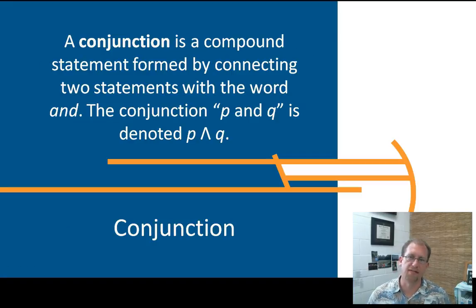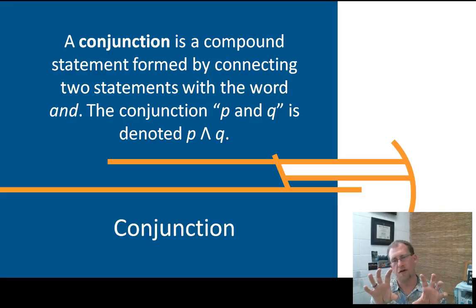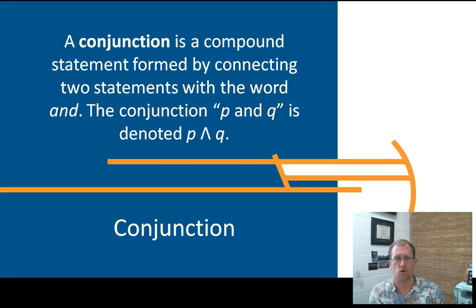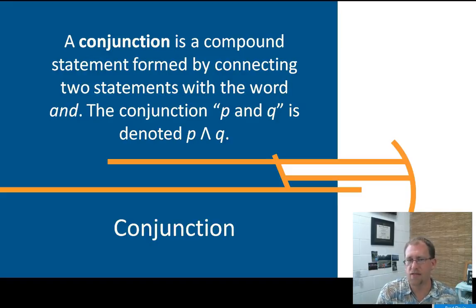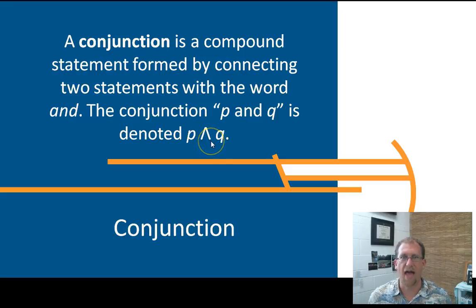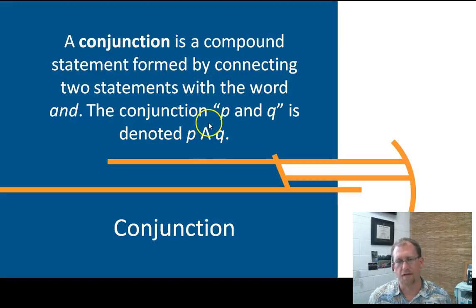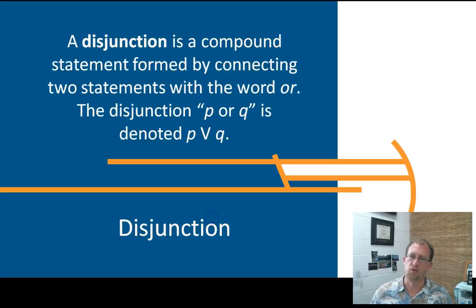The next kind of truth statement we're going to look at is a conjunction. A conjunction is an 'and' statement — you take two statements, and in order for the conjunction to be true, both of them have to be true. A conjunction is a compound statement formed by connecting two statements with the word 'and.' The conjunction P and Q is denoted as P with a little caret symbol — which you read as 'and' — then Q. It looks almost like an A; if you were to cross that, it would be an A. Both parts of the statement must be true for the conjunction to be true.